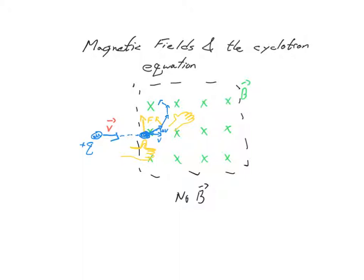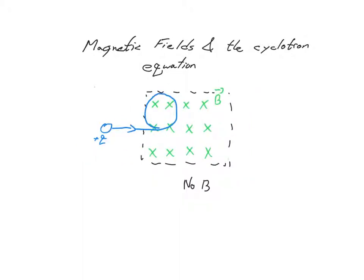Pause for a second and think about it. If the path you came up with was a circle, you are right. What's going to happen is that every instant, the force acting on the particle is tangent to the velocity of the particle. And as we know, that's a hallmark of centripetal force and circular motion. So what we discovered is that the magnetic force Fb is the centripetal force Fc on the moving charged particle.